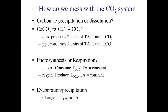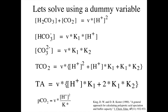To solve these exactly, we're going to use an algebraic trick called the dummy variable approach. We break the carbonate system parameters into a dummy variable V and terms that are only defined in terms of proton concentration and equilibrium constants. Carbonic acid plus CO2 is the dummy variable times H+ squared; bicarbonate HCO3- is the dummy variable times K1 times H+; carbonate is the dummy variable times K1 times K2.